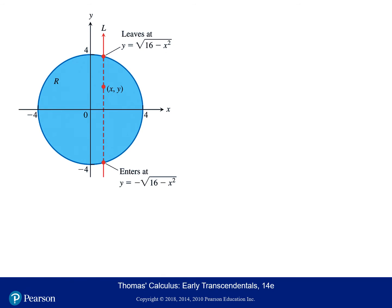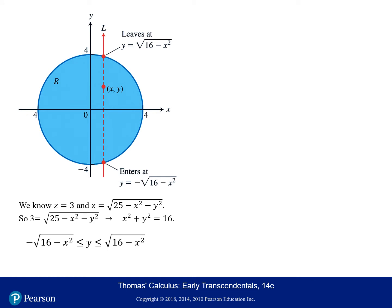For the Y limits of integration, we look at the shadow of our three-dimensional region in the XY plane. This shadow is the projection of our region. Since Z equals 3 at the bottom and the top of the sphere in terms of Z equals the square root, setting them equal and solving gives us the equation of the shadow: the circle X squared plus Y squared equals 16. Drawing a line parallel to the Y axis through region R, it enters at the bottom half of the circle and exits the top half. Solving for Y, Y is bounded between negative square root of (16 minus X squared) and positive square root of (16 minus X squared).